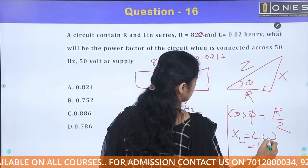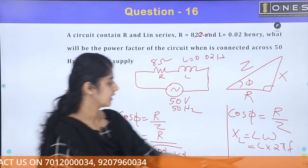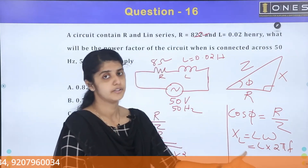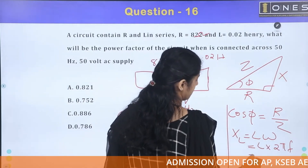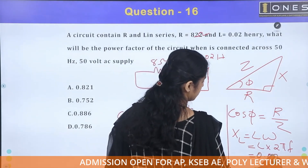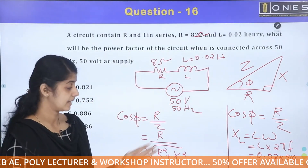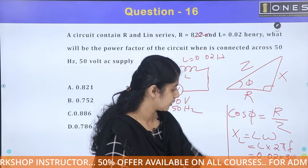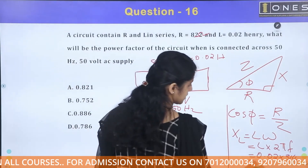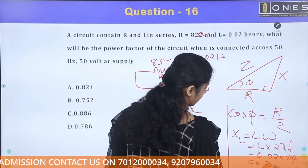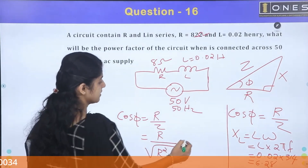Now let's calculate. The frequency f is 50 hertz. XL equals 2π times f times L, so 2 × 3.14 × 100 = 314, then 314 × 0.02 gives XL = 6.28 ohm.